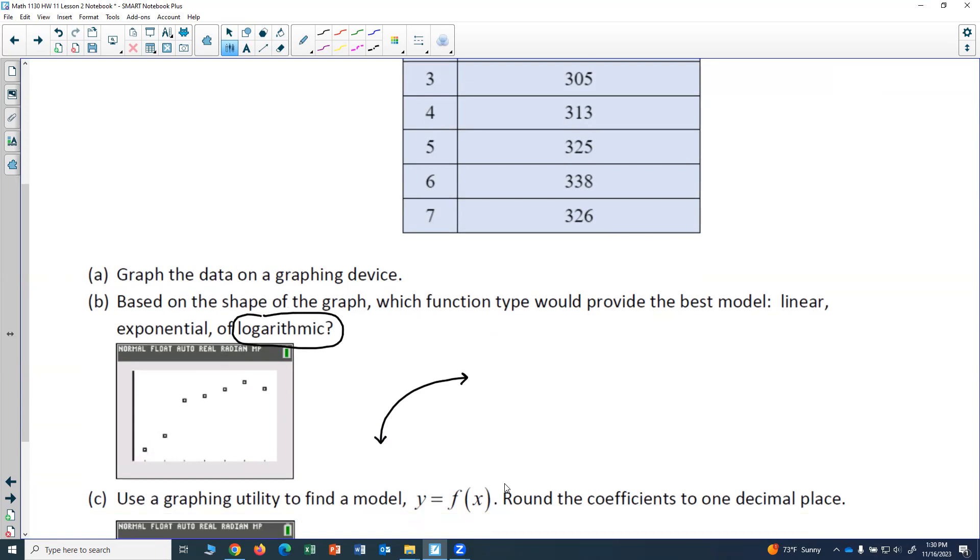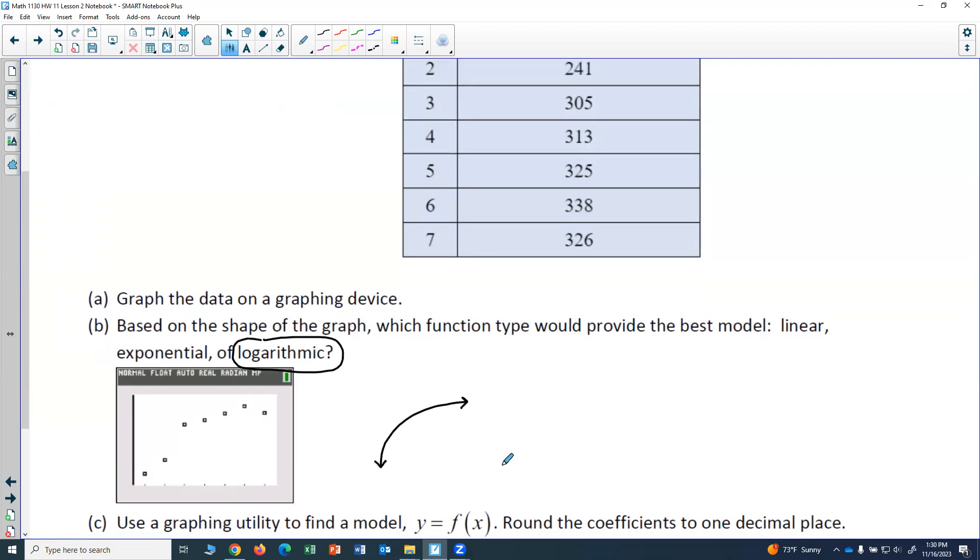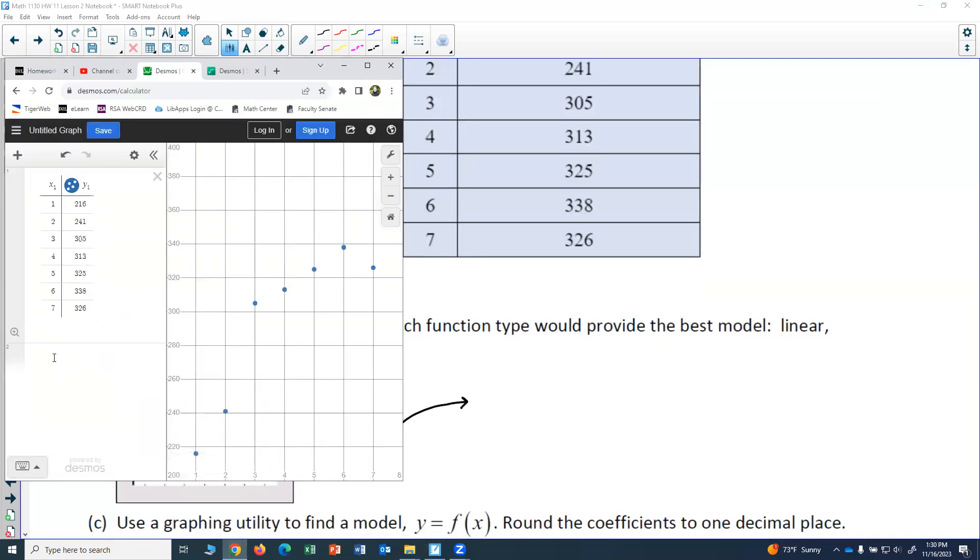And now I want to find a model y equals f of x and I'm doing a logarithmic regression because that's what I picked here. So the form of a logarithmic regression is a plus b natural log of x. So over here in box two I'll put y1, do the tilde by doing the shift key and then the key just to the left of number one on your keyboard. And then we'll put a plus b natural log of x1.